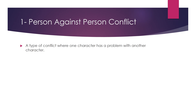Let's start with the first one: person against person conflict. It is a type of conflict where one character has a problem with another character. This is a very foundational type of conflict where two persons are in conflict — they argue over something, there is disagreement between two, three, or a group of people. This is the most fundamental and introductory type of conflict. We watch this type of conflict in most movies and read it in most stories and novels.